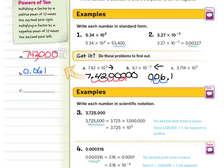For 3.714 times 10 to the second: rewriting 3.714, the exponent 2 is positive so we move to the right. Moving the decimal point 2 spots to the right gives a final answer of 371.4.